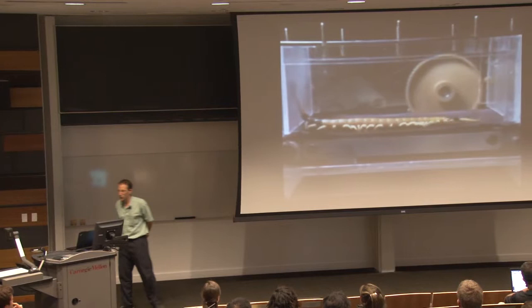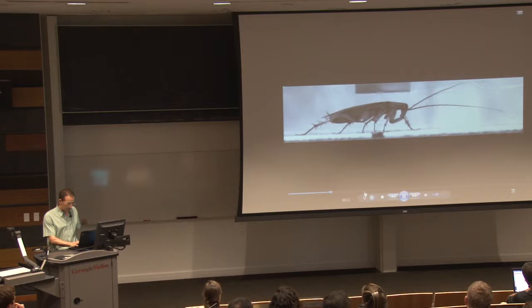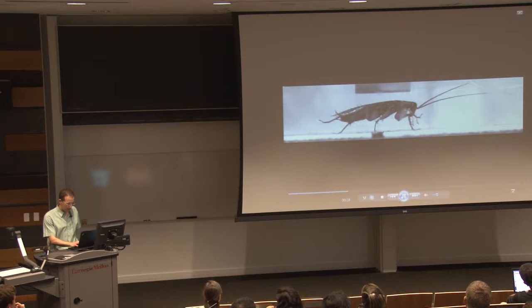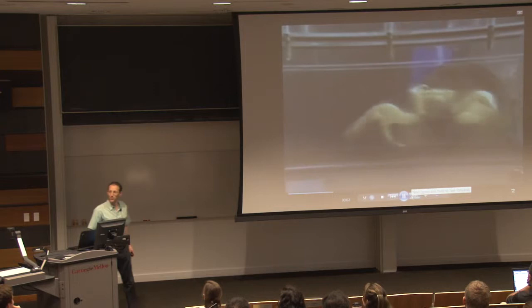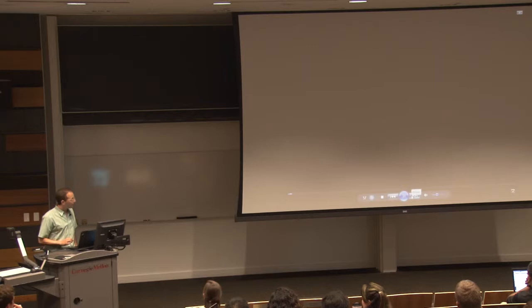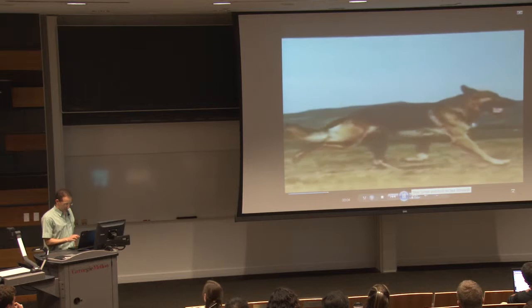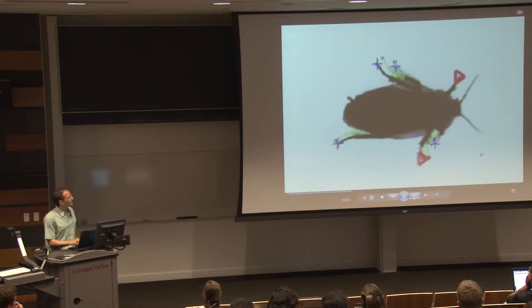What are these animals all doing? The common theme for all these animals is that when they're stepping down, multiple legs are hitting the ground at once. This is the cockroach I worked on — the triangles show you legs that are in stance, and you can see that all of them go into stance almost instantaneously.